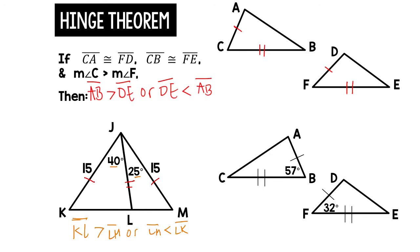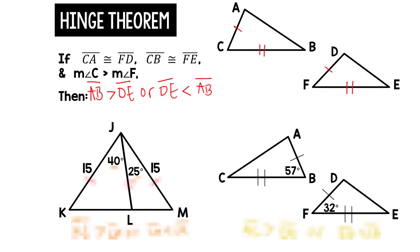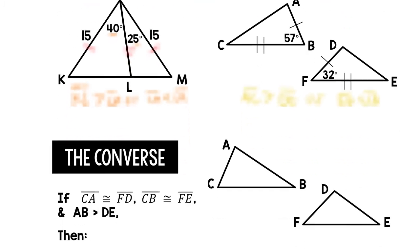Let's do one more. We've got AB congruent to DF, and CB congruent to FE. Angle DFE is 32 and angle B is 57. Since 57 is greater than 32, we can say that segment AC will be greater than segment DE, or segment ED will be less than segment CA. This is a whole lot like one triangle — we're just using a few more ideas.